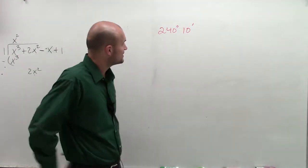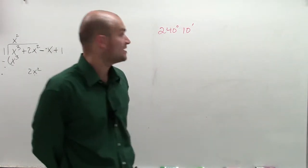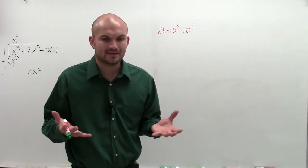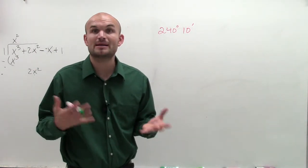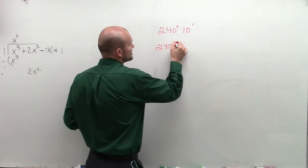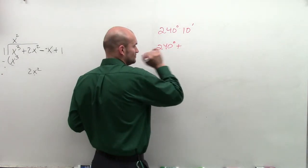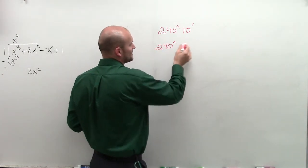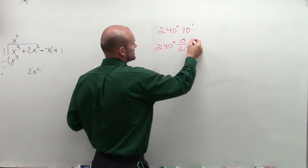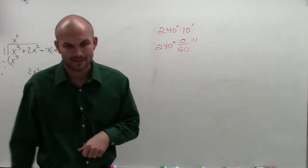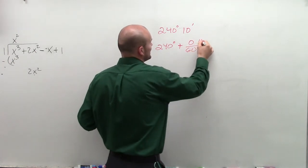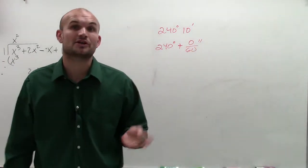What I have here is represented as 240 degrees and 10 minutes. When thinking about how many minutes it takes to make a degree, we can write this as 240 degrees plus — and 60 over 60 minutes, meaning there are 60 minutes that are going to make up 1 degree.